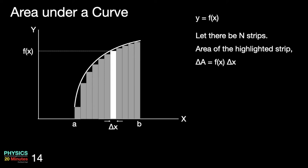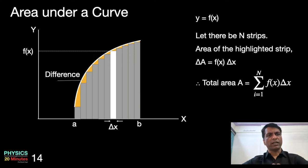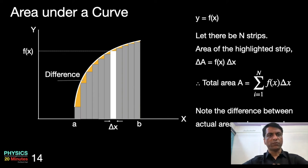If I get the area of one strip, I can sum it over all the strips to get the total area. So the total area will be the summation from i = 1 to n of f(x) Δx. This will add up the area of all the strips. But you can see there is a problem here — the area of all the strips added together will not give me the real area under the curve. Some part of the real area under the curve will not be covered in this calculation. The difference could be significant if the number of strips is small.